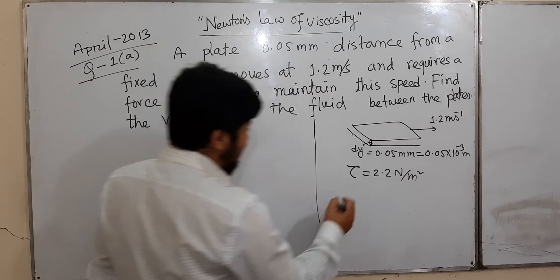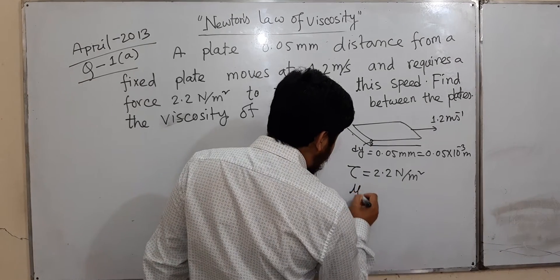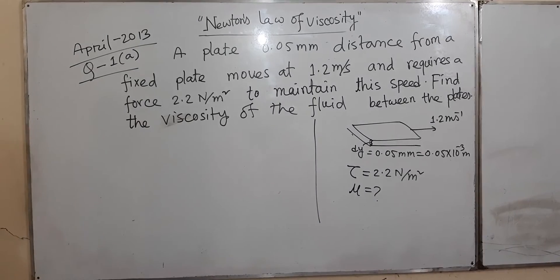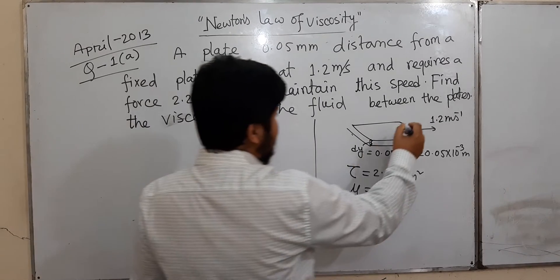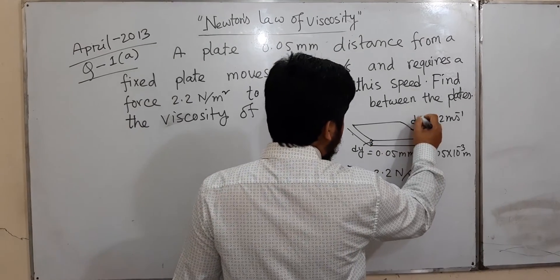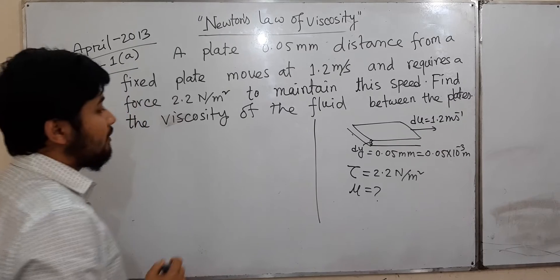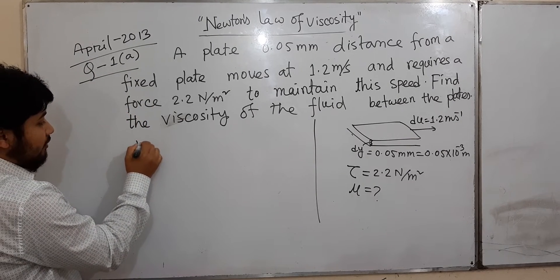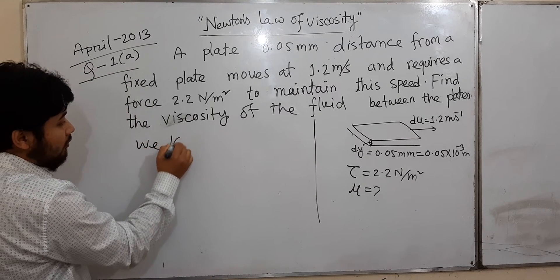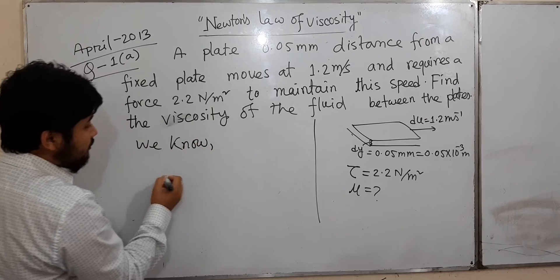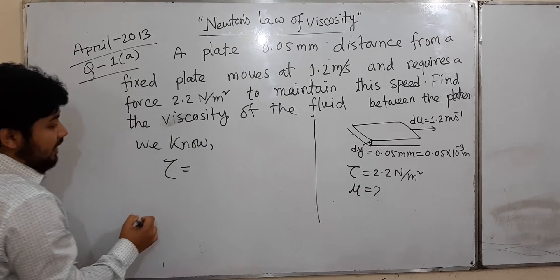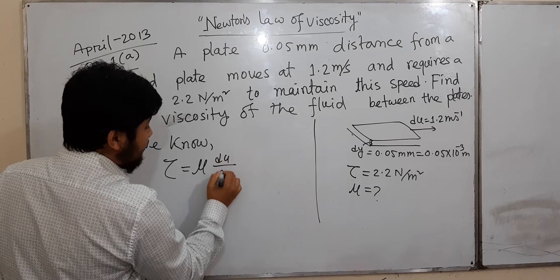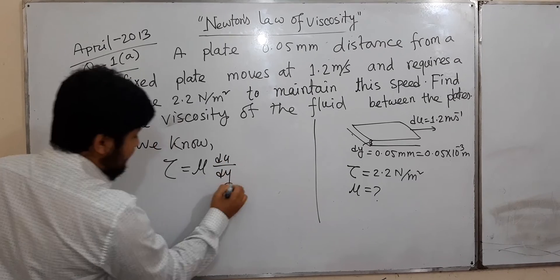The force required to maintain this speed is tau (τ). We know Newton's Law of Viscosity: tau is equal to mu times du over dy.